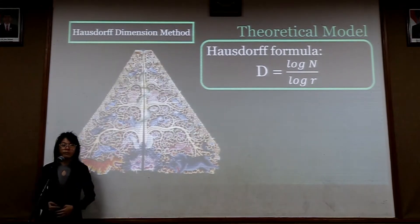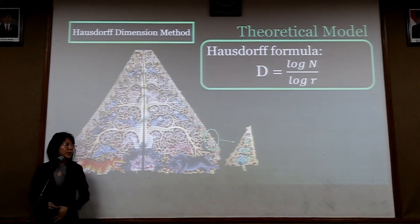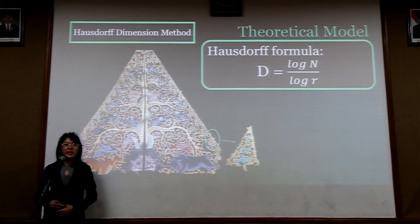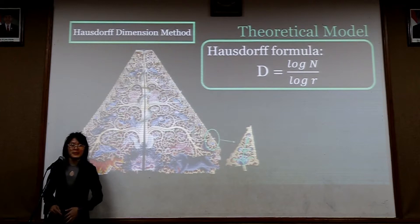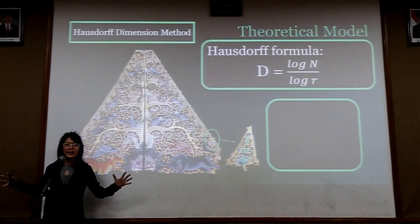This is an example of tree of life inside Kayon. And this is its self-similar, or we can say the small tree of life. N is the number of self-similar pieces inside the tree of life, and R is the ratio between the big one and the small one.